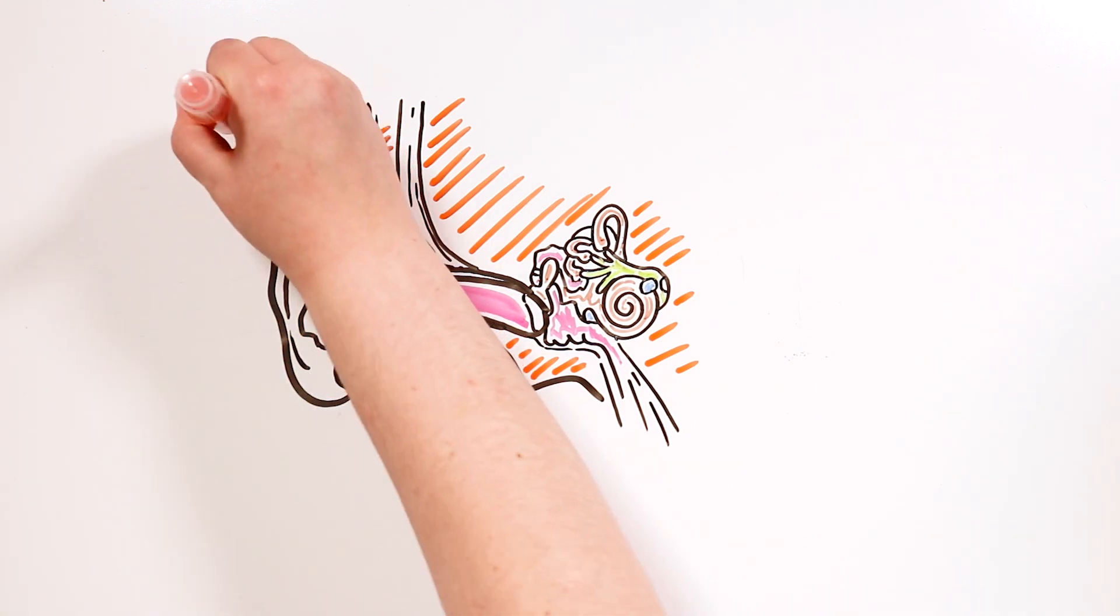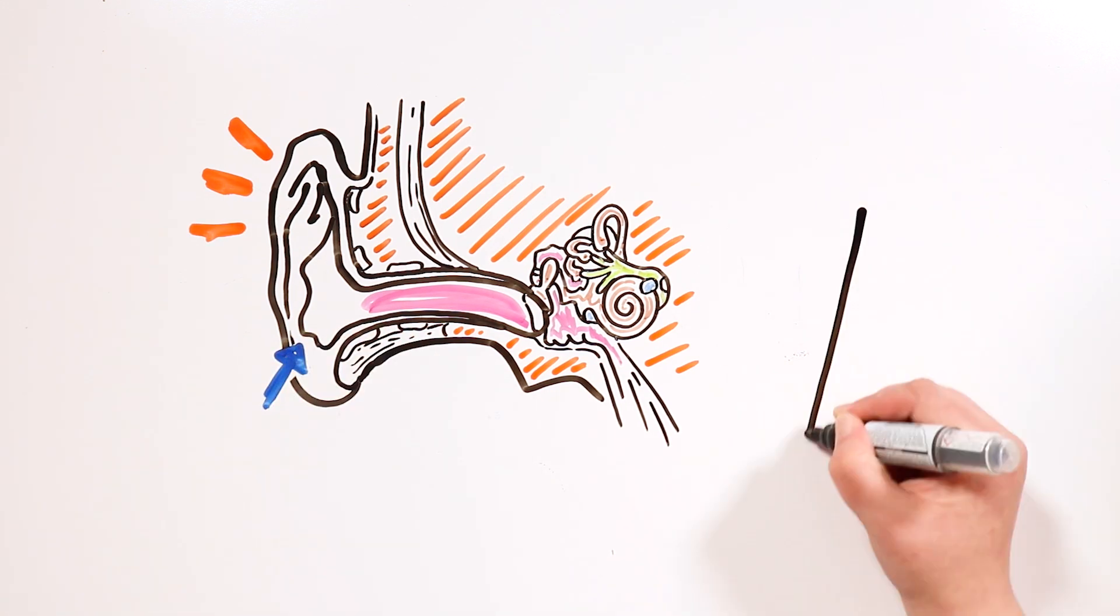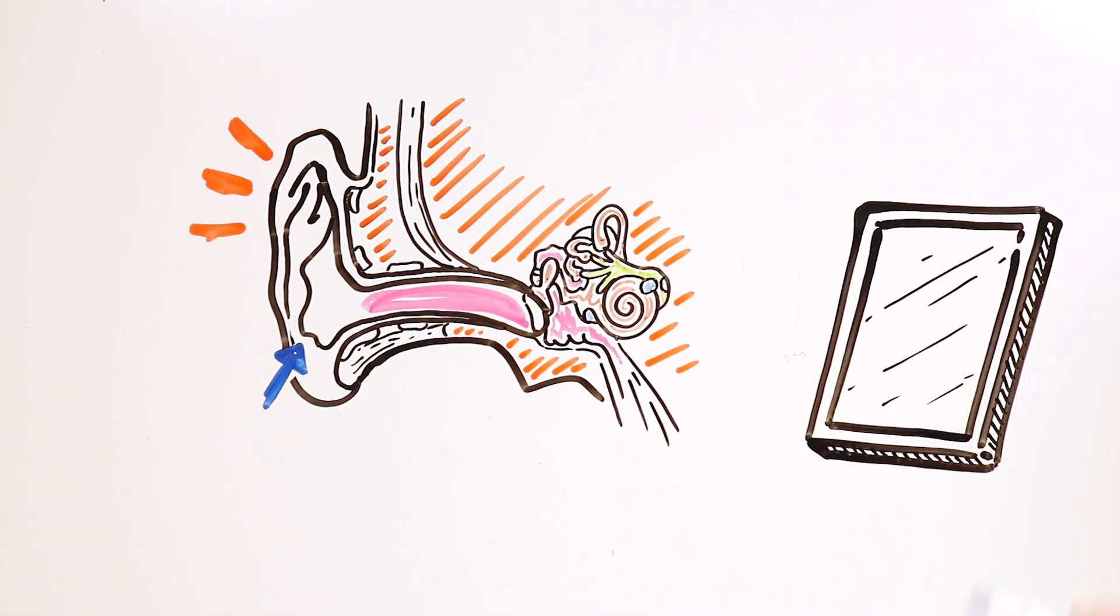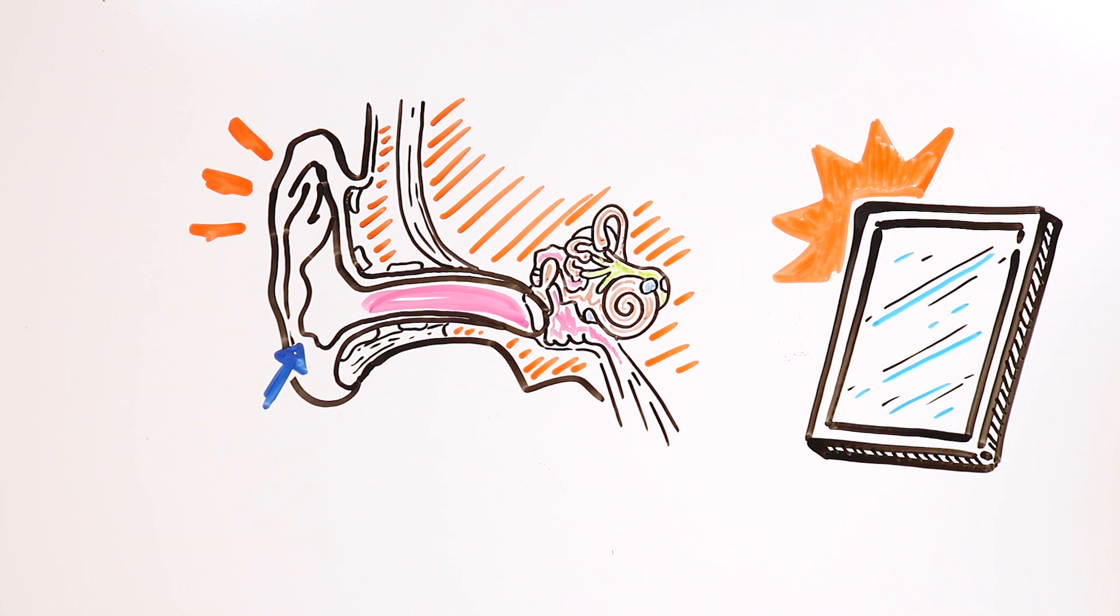In the outer ear we can find the visible part of the ear which is known as the pina. If you want, you can grab a mirror to look at it. We'll give you a few seconds to do it! Okay, let's continue.